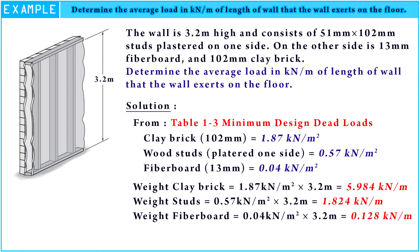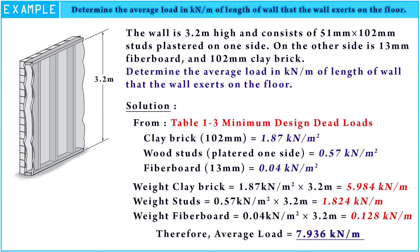After we know the dead loads of each material, we can find the average load per length of wall that the wall exerts on the floor. Therefore, the answer is 7.936 kilonewton per meter.